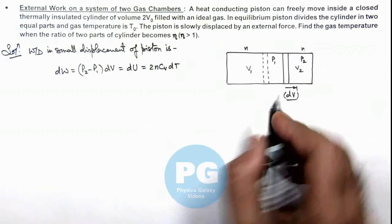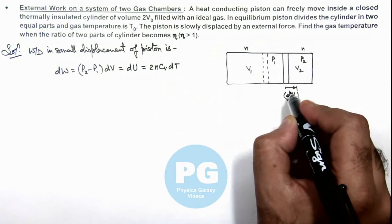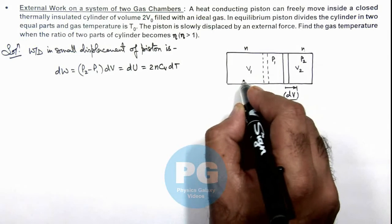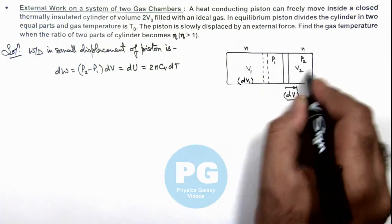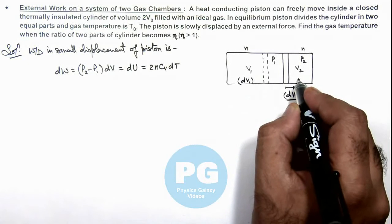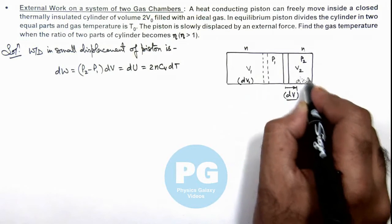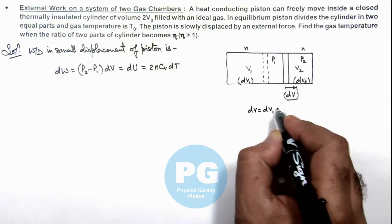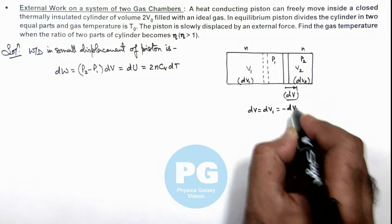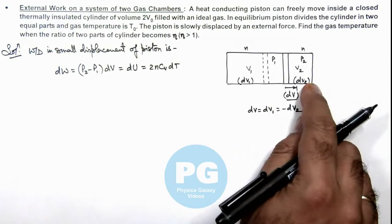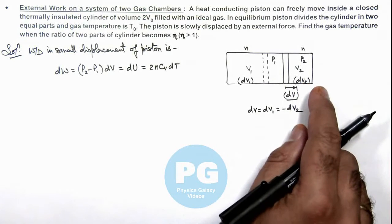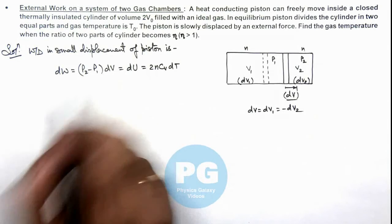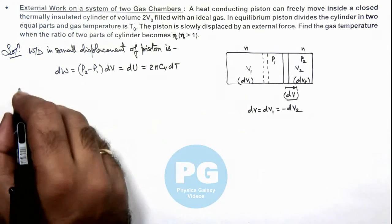Here we can also see if the increase in volume is dV, then we can say V₁ is increasing by dV₁ and V₂ is decreasing by dV₂. So here we can write dV is equal to dV₁ and the same is equal to minus dV₂ because volume V₂ is decreasing. Now in this situation if we substitute the values of P₁ and P₂ on the two sides we can write...